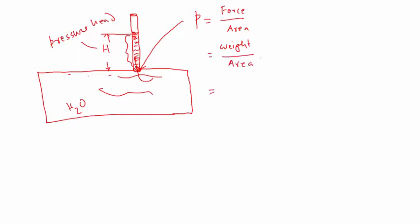Now what I can do also is multiply both denominator and numerator by H. So then I can separate this: the weight divided by the area times height. Now area times height for a cylinder is the volume.